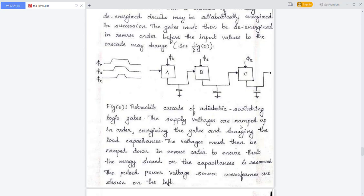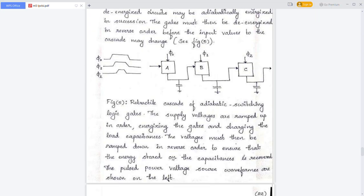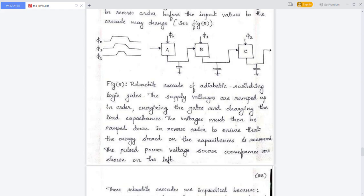The supply voltages are ramped up in order, energizing the gates and charging the load capacitance. The voltage must then be ramped down in the reverse order, so that the energy stored on the capacitance is recovered back — which is the key principle of the adiabatic process.